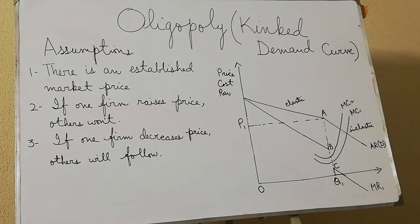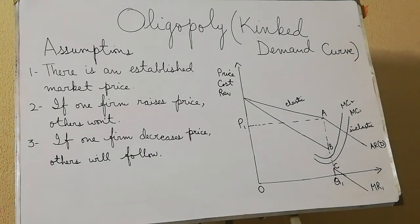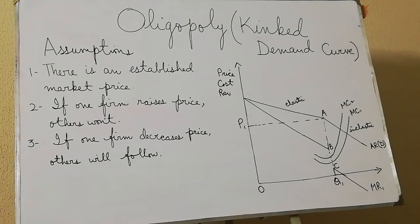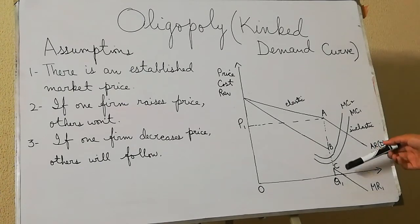There are a few limitations of the kinked demand curve model. First, this initial level of price is assumed to be stable, but there is no clarification or rationale provided for how this price level is actually decided by the industry — there is no explanation for why this price becomes the sticky or prevailing price for all firms.